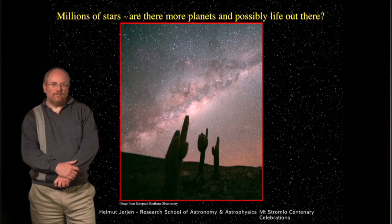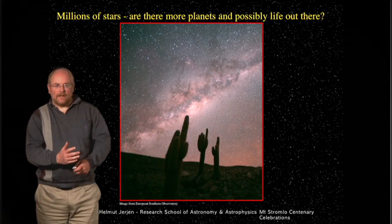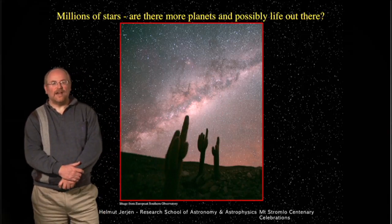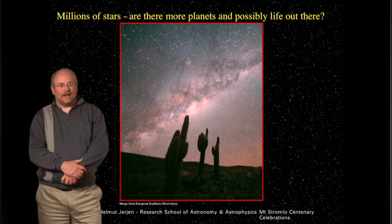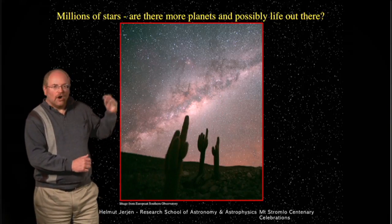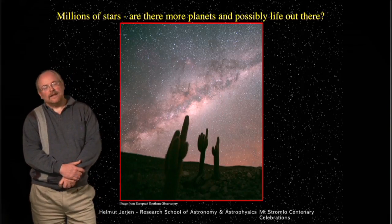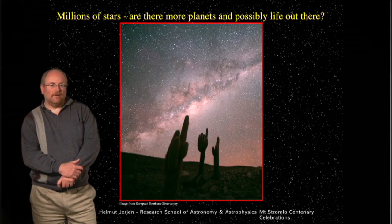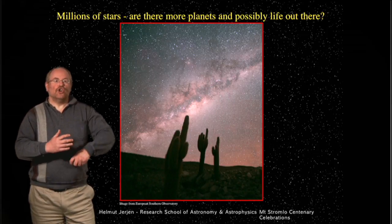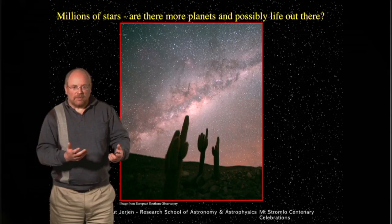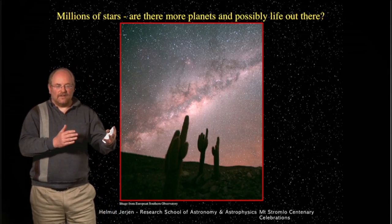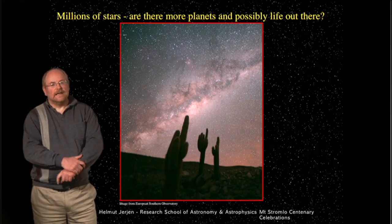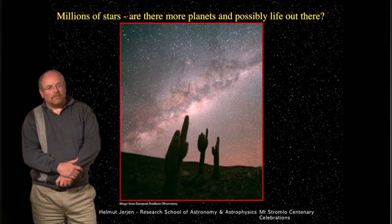We just learned about the life cycle of stars and how it works. When you look at the Milky Way, there are many, many stars in the Milky Way region, and you're probably asking the question: if every star is a sun, are there other planets out there, and maybe possible life forms?